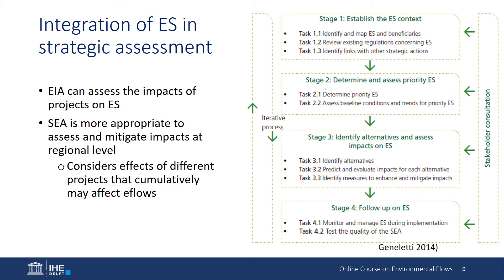The diagram illustrates a systematic and iterative process. The United Nations considers four steps. The first one is to establish the context for ecosystem services and the assessment. This includes the social, environmental, and economic context, and should include mapping ecosystem services and the beneficiaries. It is also important to consider the links with other laws, regulations, or other actions.